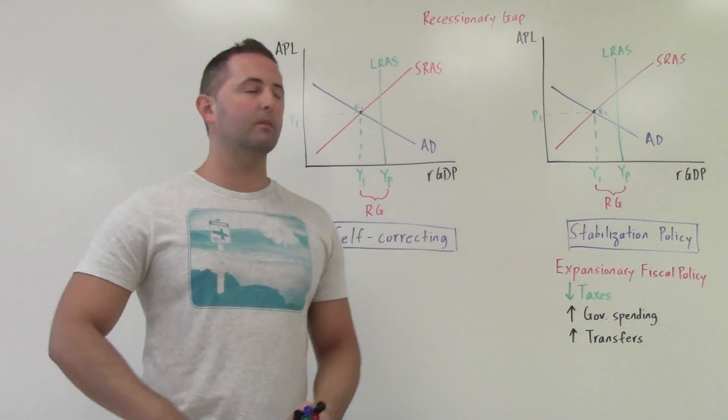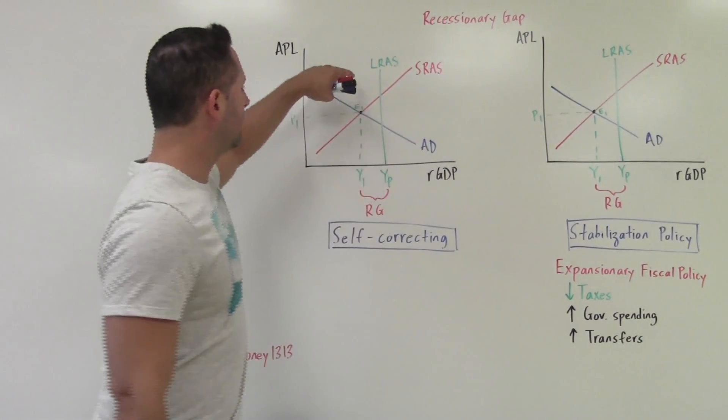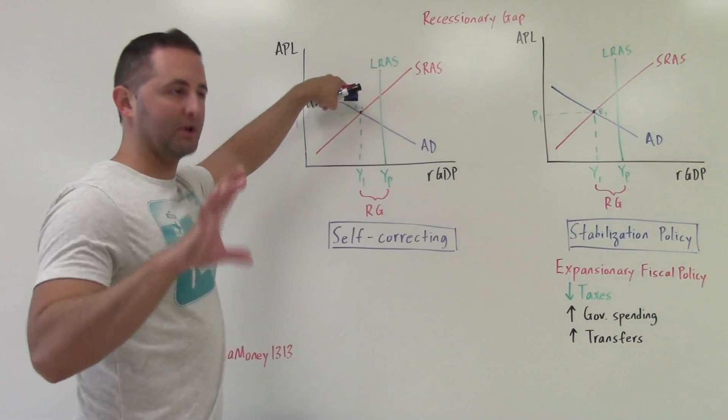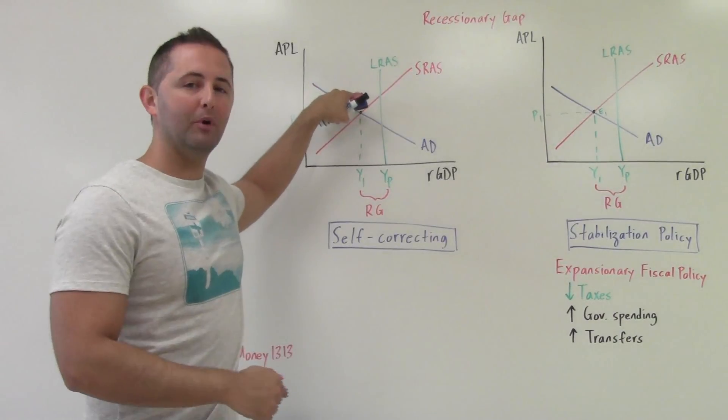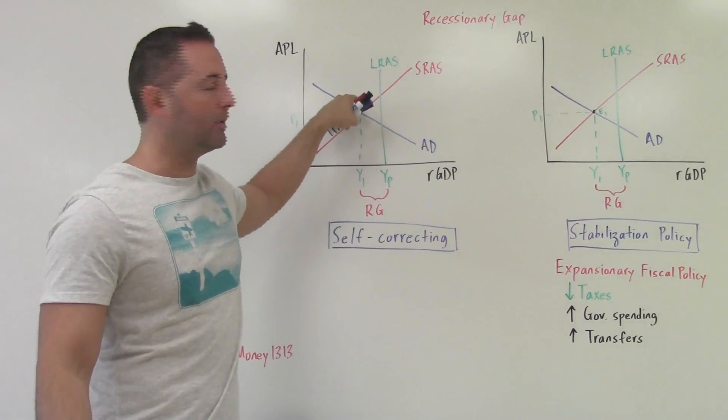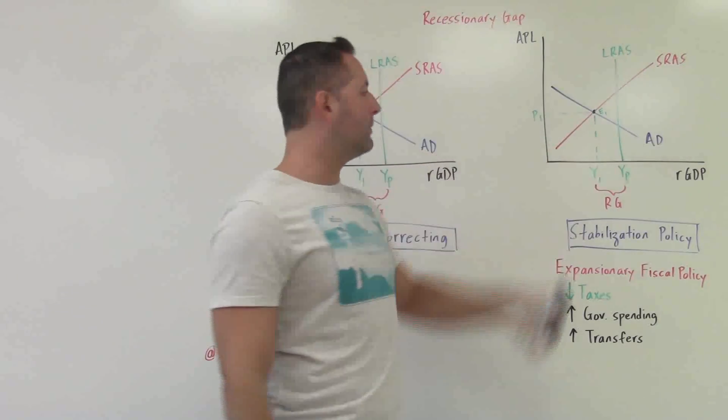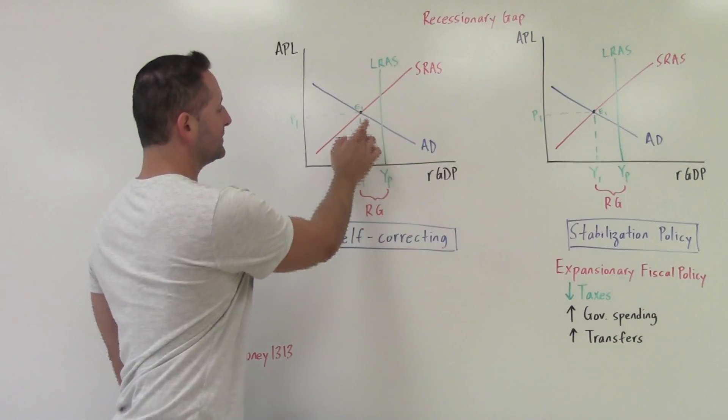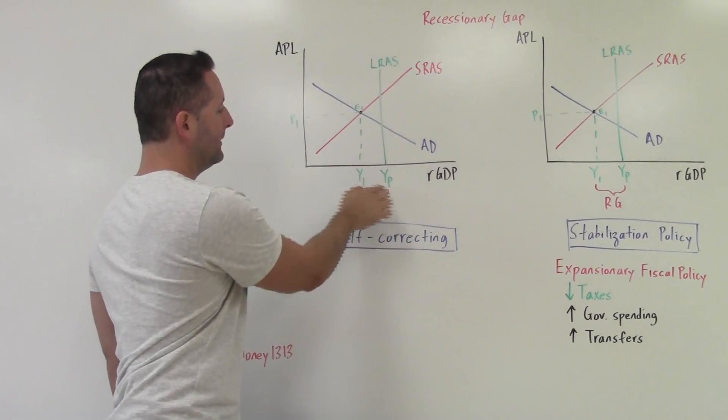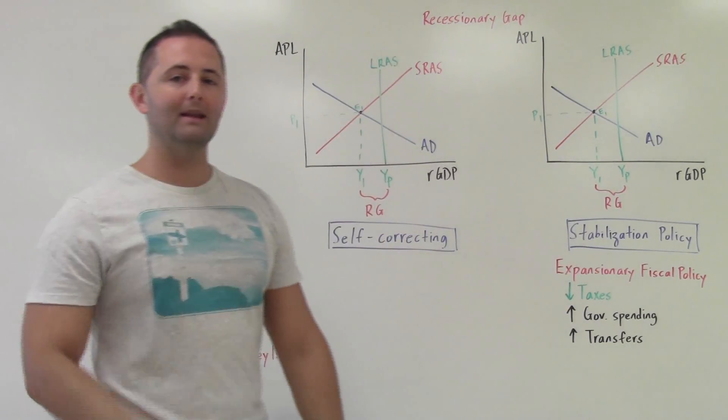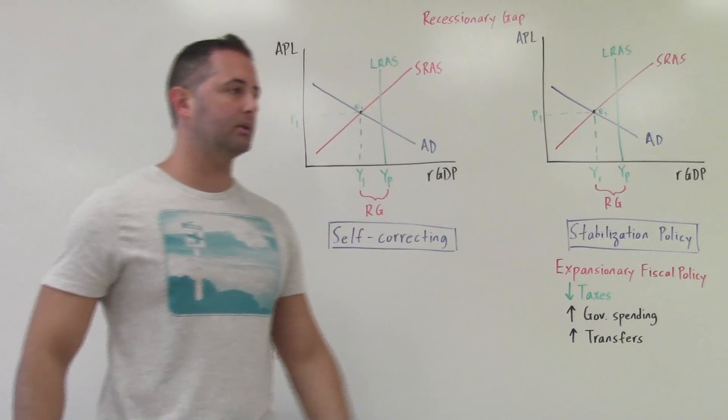Remember with the recessionary gap, actual output is less than potential output. That's why E1 is to the left of the LRAS curve on both of these. That difference between actual output and potential output, that is your recessionary gap.